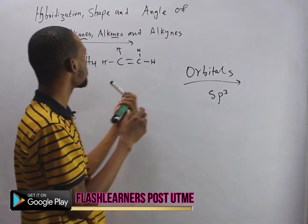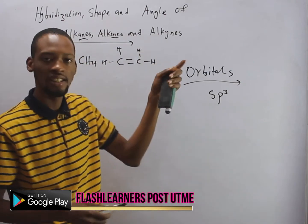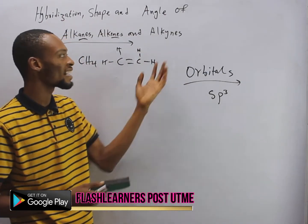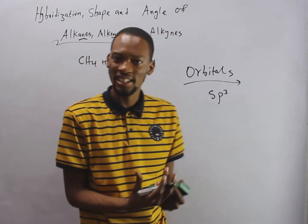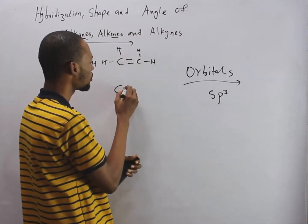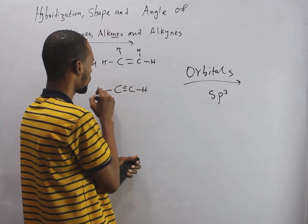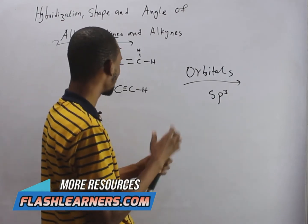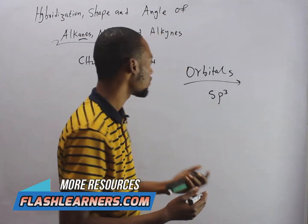The simplest member of alkenes is ethene. Alkynes are also unsaturated — they have carbon-to-carbon triple bonding. They also have a general formula.